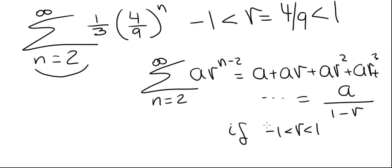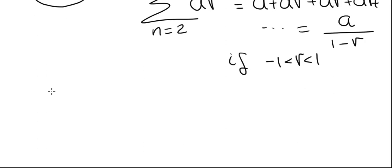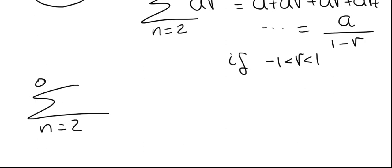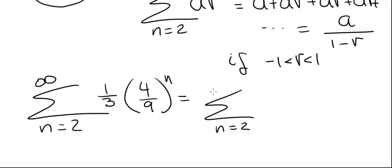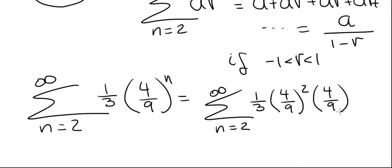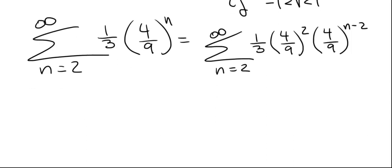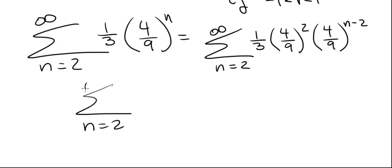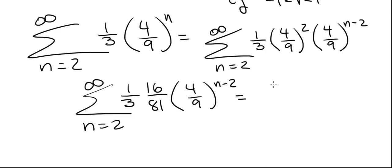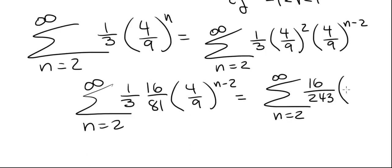In our case we have a and r, but r is raised to the nth power, not the n minus 2 power, so we need to fix this. Starting from 1 over 3 times 4 over 9 to the n, we factor out 4 over 9 squared. This gives us 1 third times 4 over 9 squared times 4 over 9 to the n minus 2 power, which is what we need. Since 4 over 9 squared is 16 over 81, our series becomes the summation from 2 to infinity of 16 over 243 times 4 over 9 to the n minus 2 power. It is now in standard form.